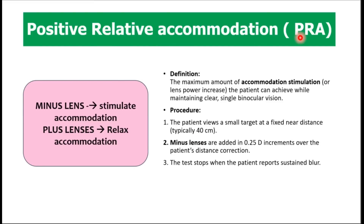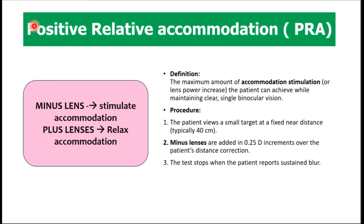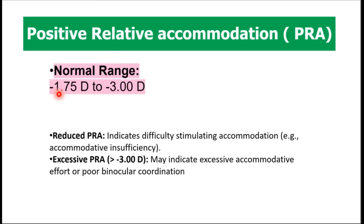Next is the positive relative amplitude of accommodation, or PRA. 'Positive' indicates you are adding to the lens power — stimulating accommodation. The maximum amount of accommodation stimulation the patient can tolerate while maintaining a clear single binocular vision is your PRA. The patient sits at 40 centimeters, looks at an accommodative target, and you add minus lenses in increments of minus 0.25 diopters over the distance correction; the test stops at sustained blur. The normal range is minus 1.75 to minus 3 diopters. A reduced PRA indicates difficulty in stimulating accommodation, seen in accommodative insufficiency.